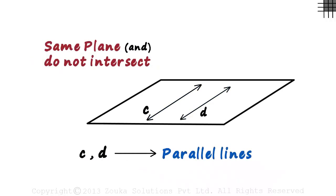So that's the complete definition of parallel lines. Lines which lie on the same plane and do not intersect.